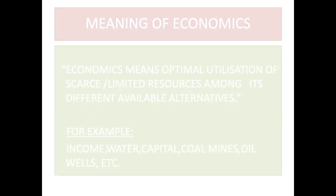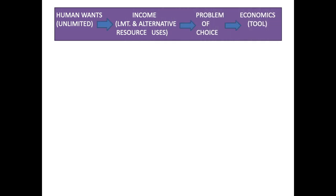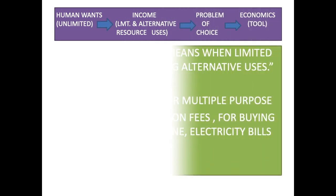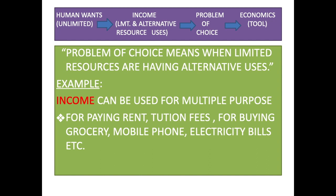Looking at the flowchart, human wants are unlimited, but to fulfill human wants the resources are limited. Taking income as an example — income is limited and it has many alternative uses as well, which gives rise to what is called the problem of choice. To solve the problem of choice, we use economics as the tool.